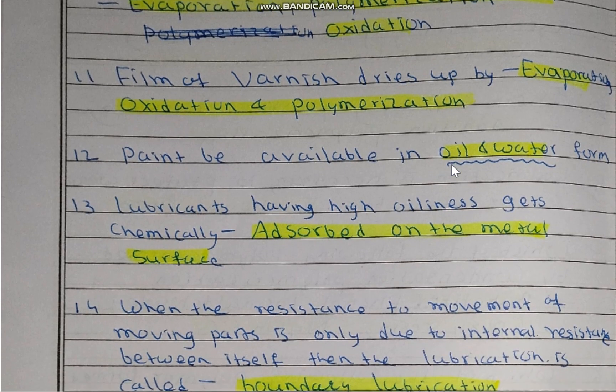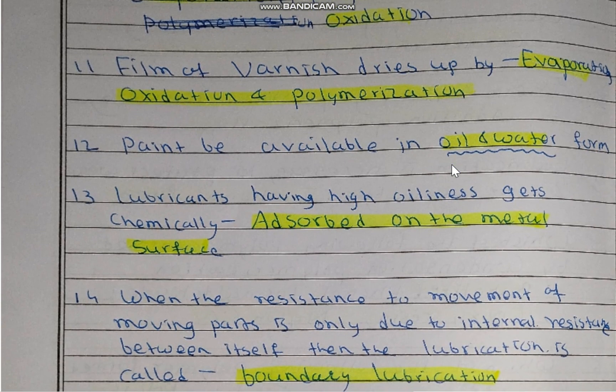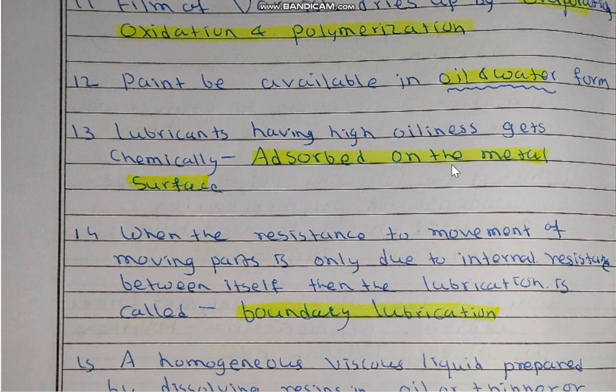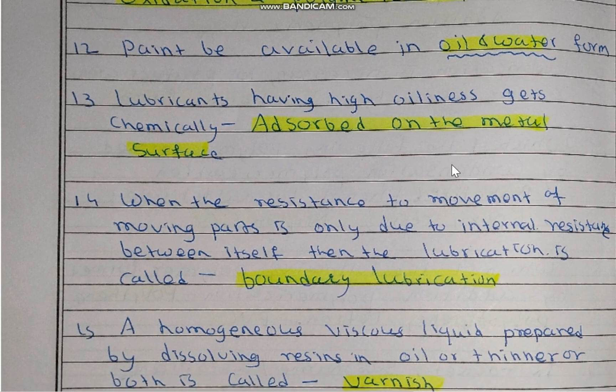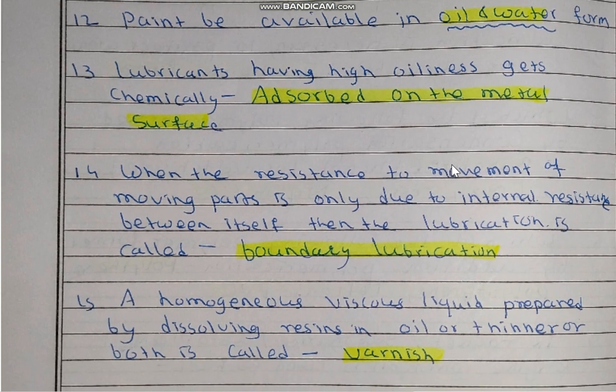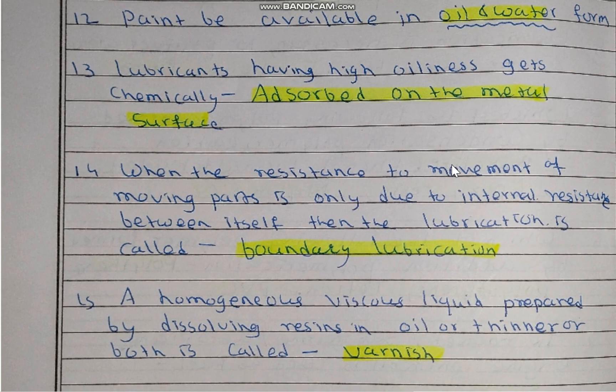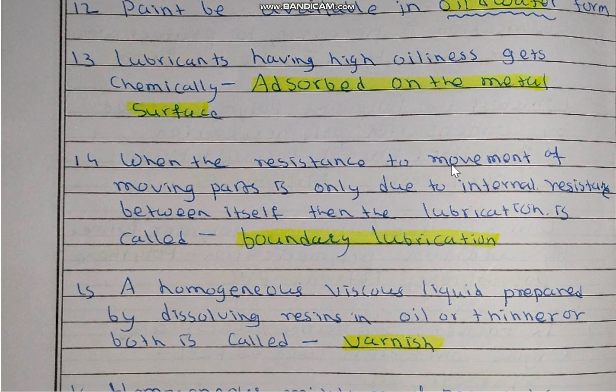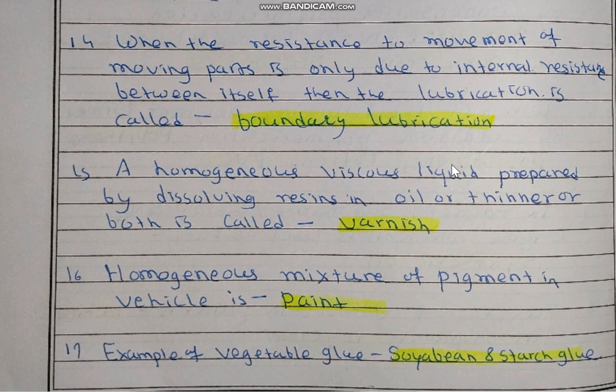The film of varnish dries up by evaporation, oxidation, and polymerization. Paint is available in oil and water form — these two are the vehicles of paint: oil and water. Lubricants having high oiliness are chemically adsorbed on the metal surface.